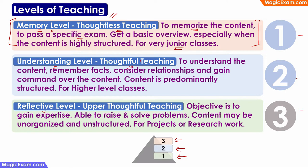Next comes understanding level, or thoughtful teaching. Here, some level of thought must be given by both teacher and students. The objective is to understand the content. For example, when teaching the concept of triangles, students must first understand the concept and the concept of area. If teaching a formula, you first understand how the formula works and then memorize it. When teaching geometry and trigonometry, you also teach the relationship between different topics. Learners will gain a large degree of command over the content. This is useful for all higher level classes, and 90% of teaching worldwide happens at the understanding level.